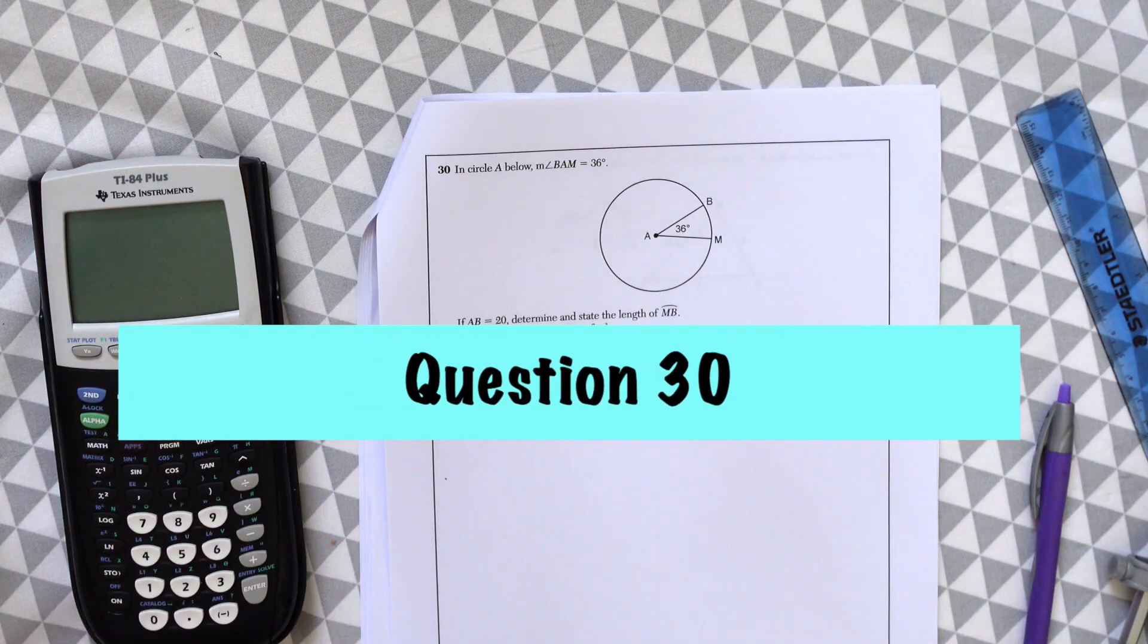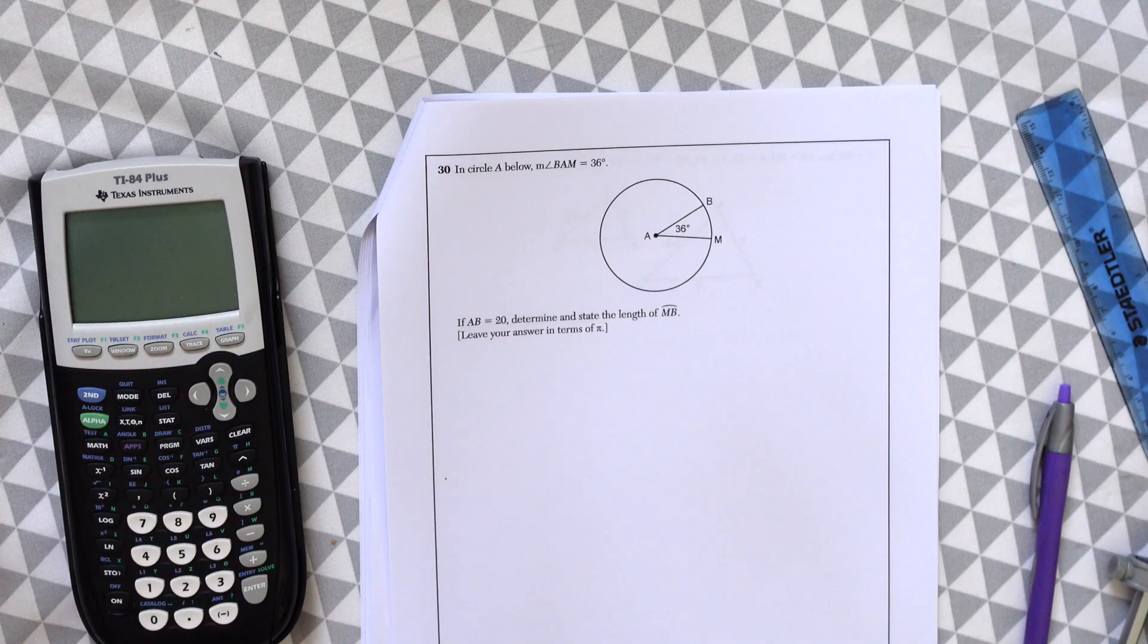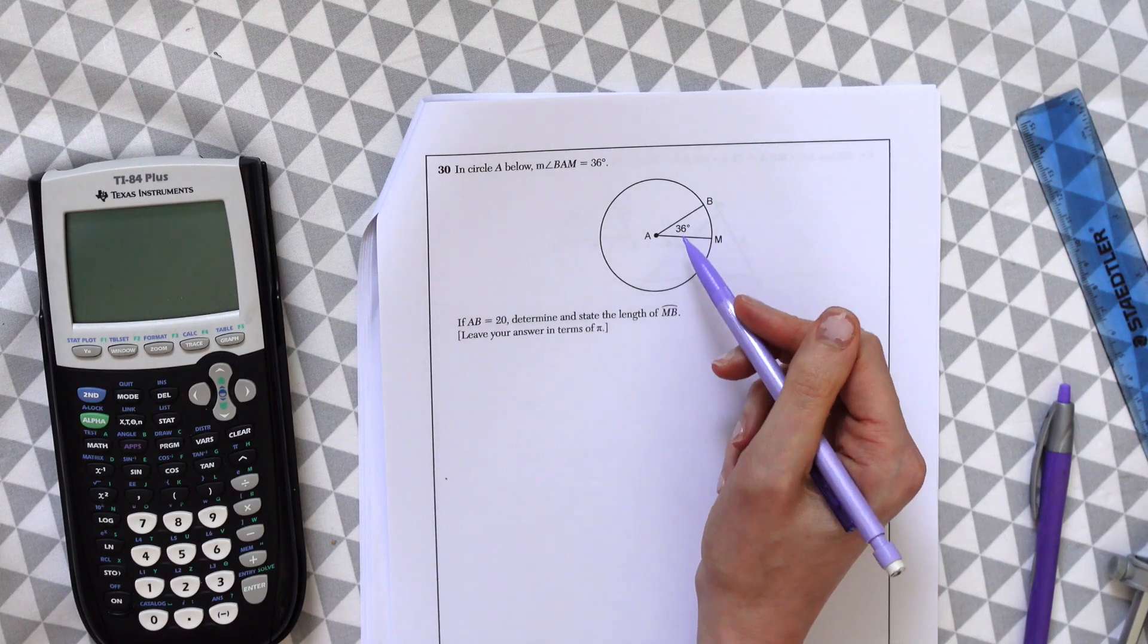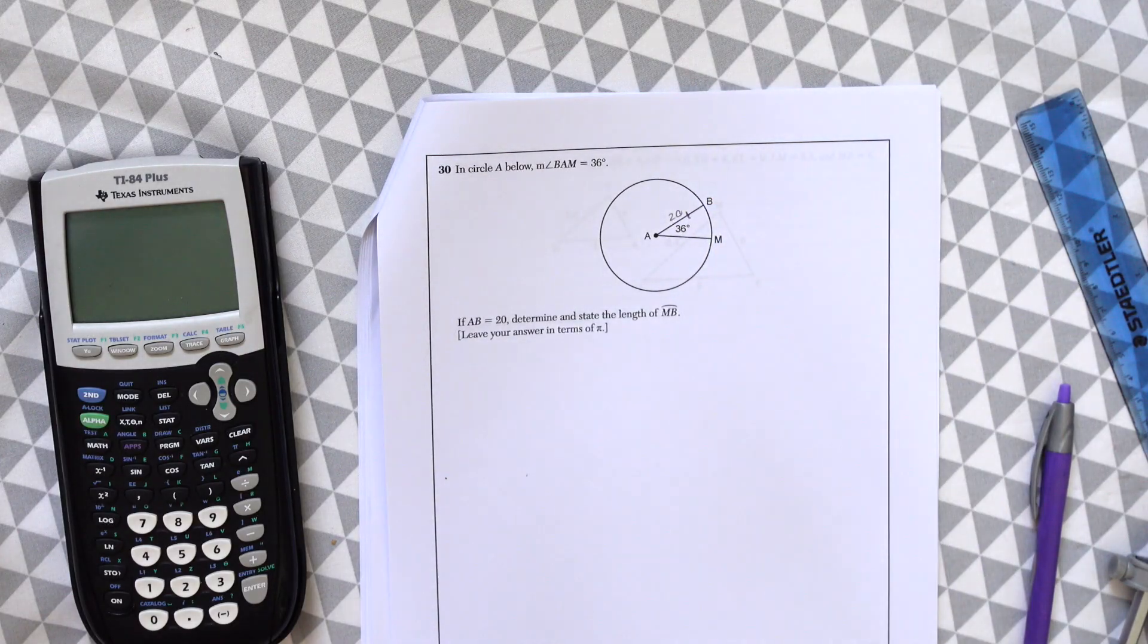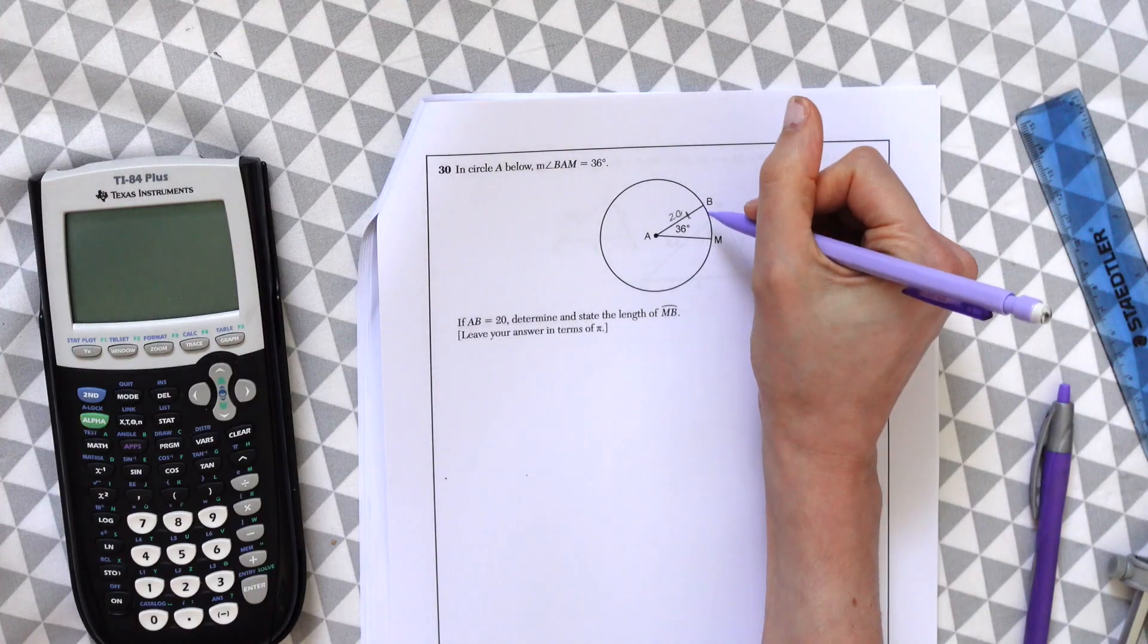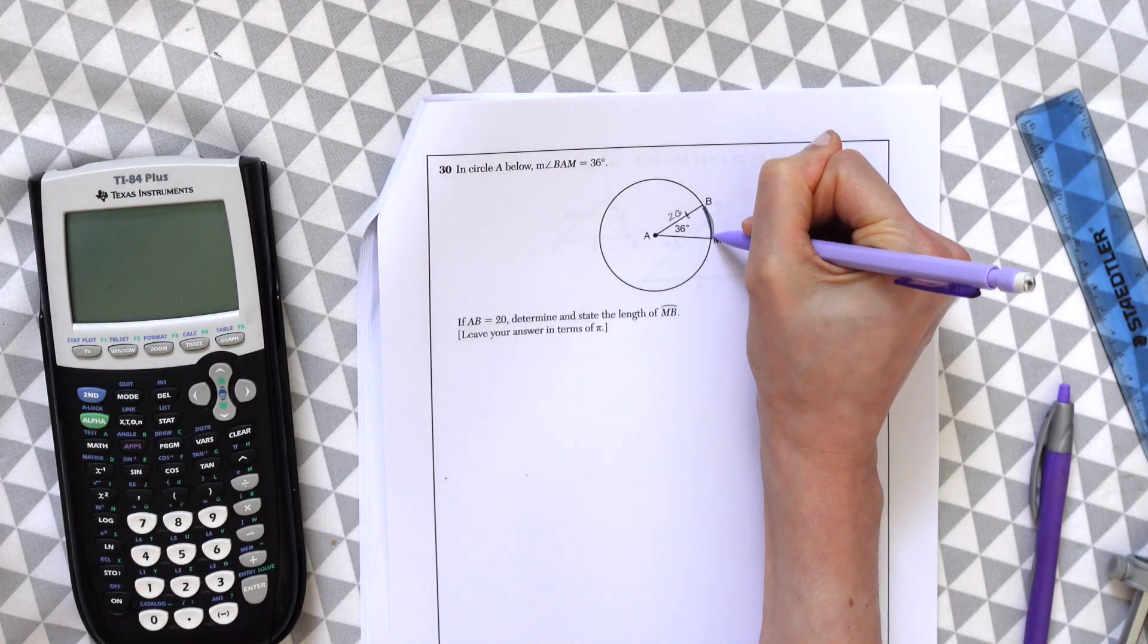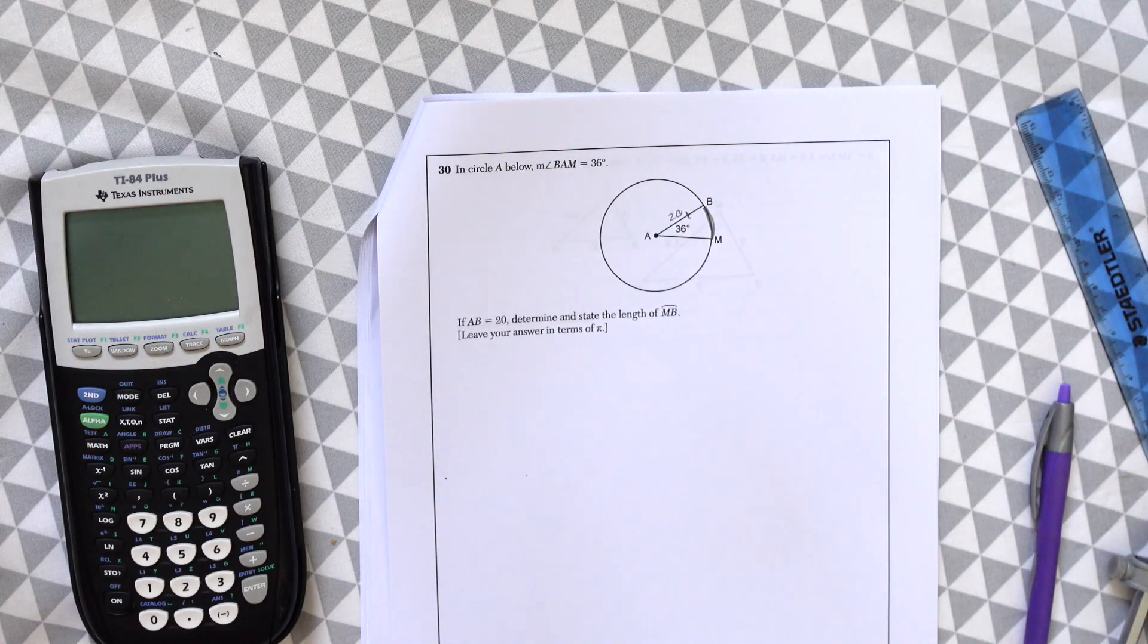Question number 30. In circle A below, angle BAM is 36 degrees. If AB is 20, so AB right here, radius is 20, determine and state the length of MB. So they want us to find this arc here, arc MB. So really what we're finding is the circumference of a sector.